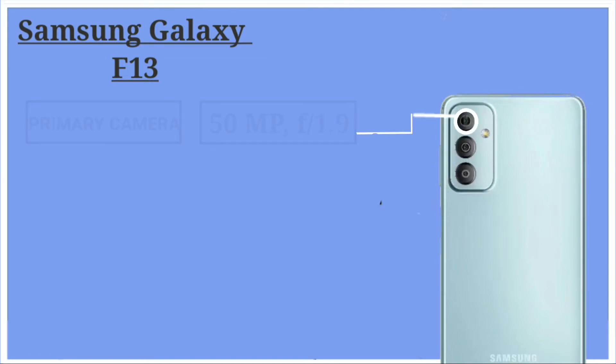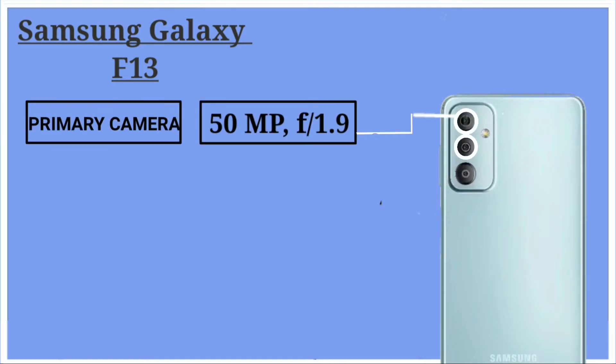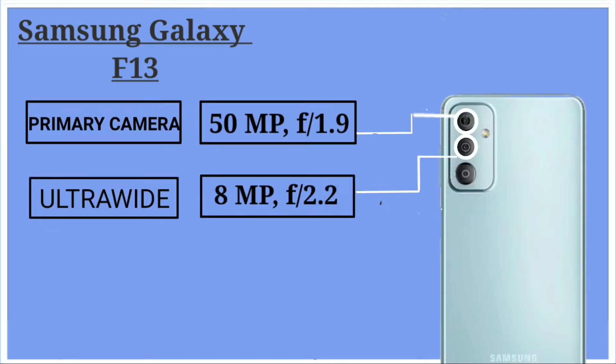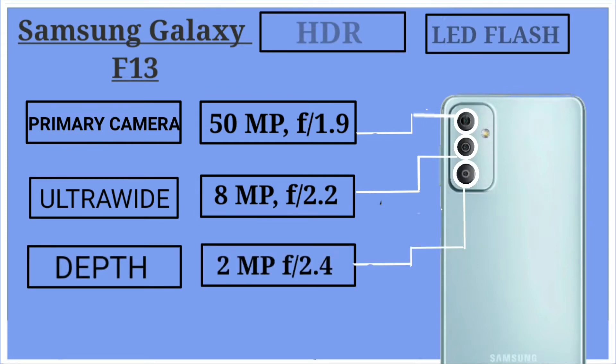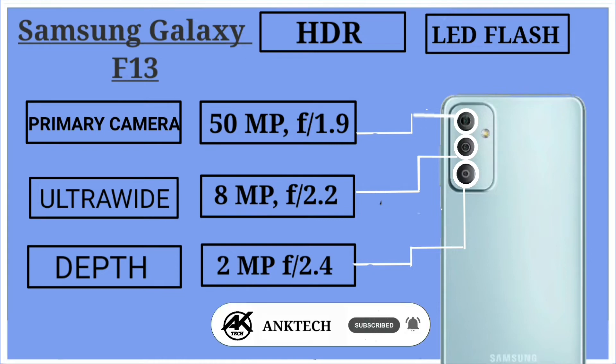Now for the Samsung Galaxy F13 — it also has a triple camera setup. The primary camera is 50 megapixels with f/1.9 aperture, an ultra-wide of 8 megapixels with f/2.2, and a depth camera of 2 megapixels with f/2.4. It also has HDR and LED flash.